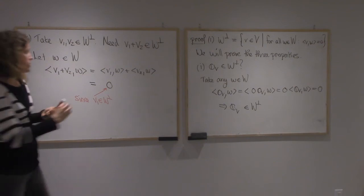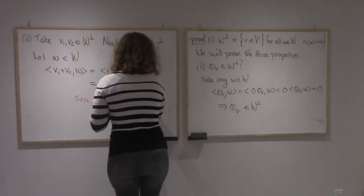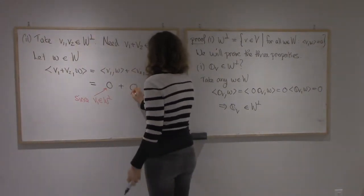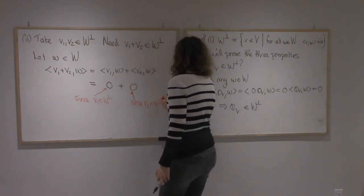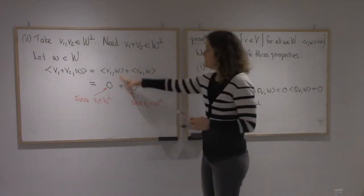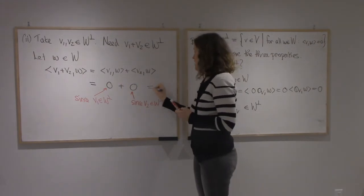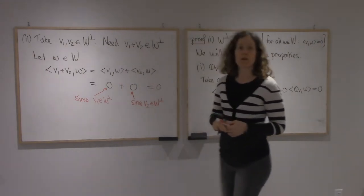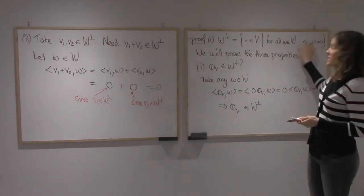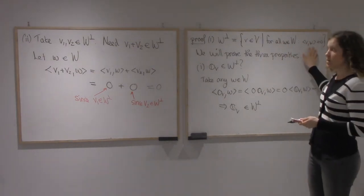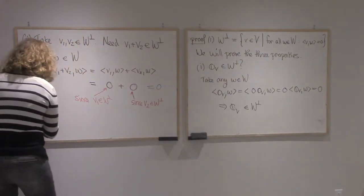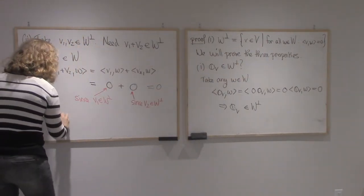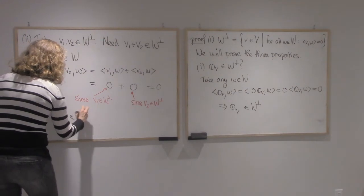And v2 is in W-perp, so the next one is zero as well. And so I get zero plus zero, I get zero. So this condition, this condition is true for v1 plus v2. That means v1 plus v2 is in W-perp.